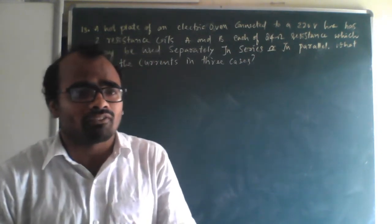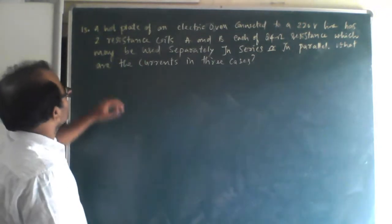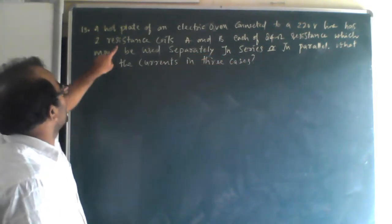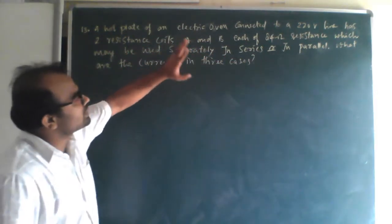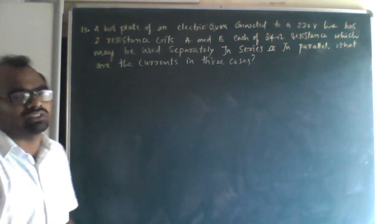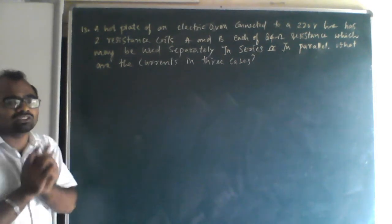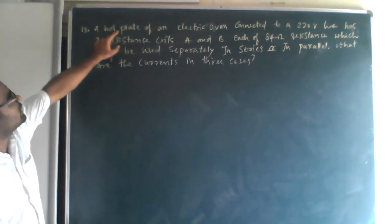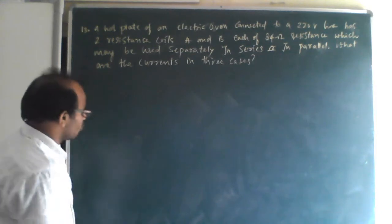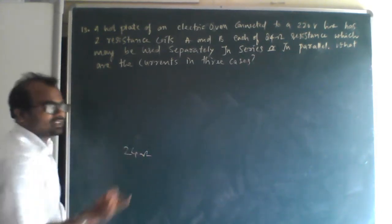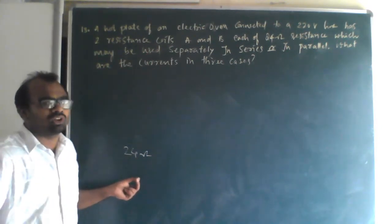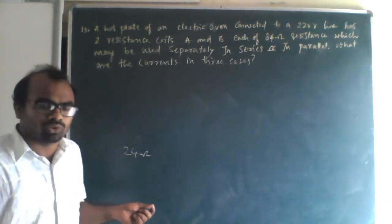The problem: a hot plate of an electric oven connected to a 220-volt line has two resistance coils A and B, each of 24 ohm resistance, which may be used separately, in series, or in parallel. We need to find the currents in three cases. In the normal case, the 24-ohm resistance is connected separately to the oven.